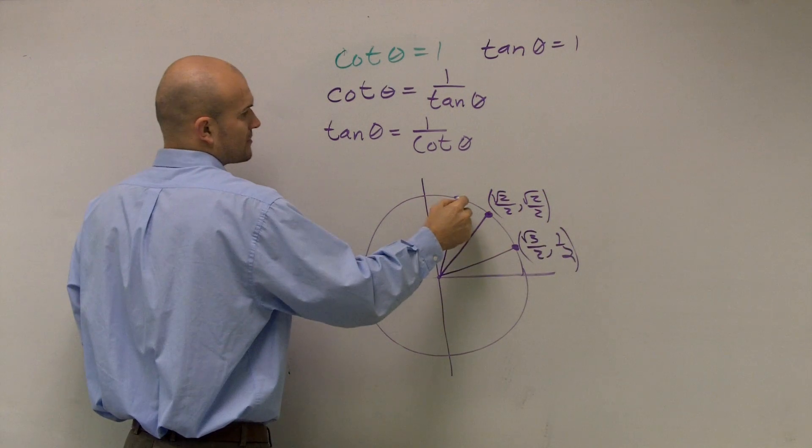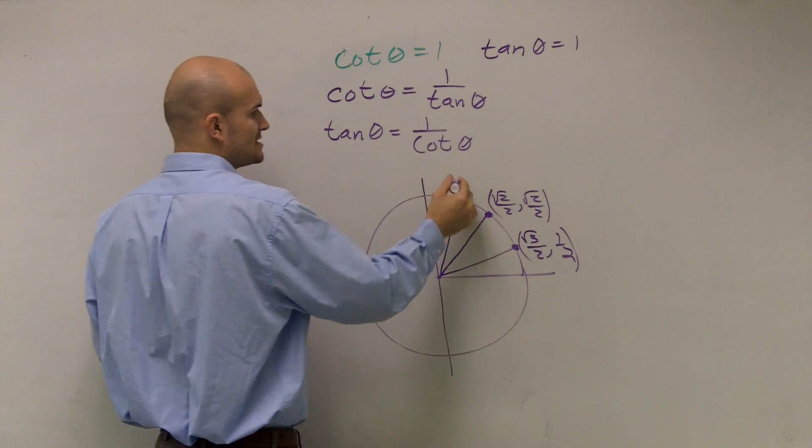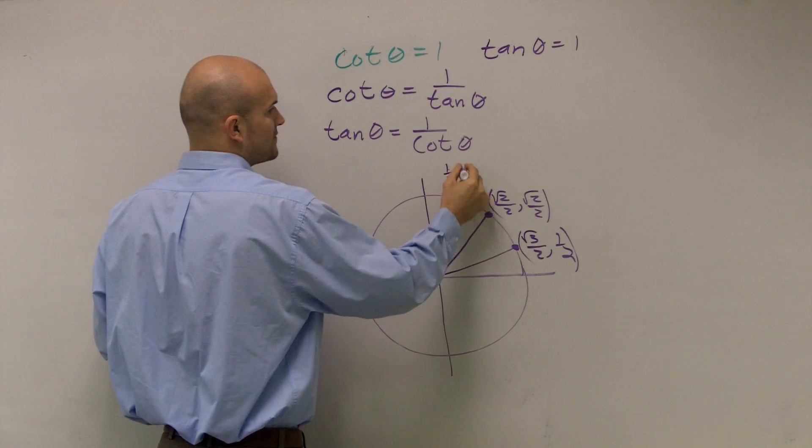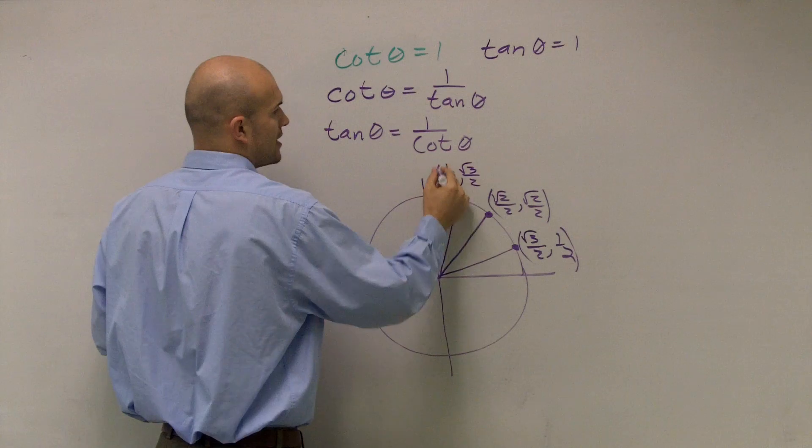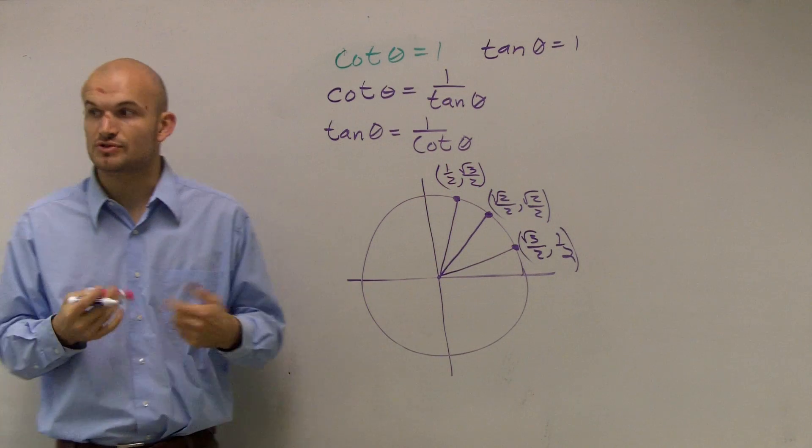And then I have my last point which is pi over 3 at 60 degrees, which is 1 half, square root of 3 over 2. And remember these are your x and y coordinates for each of these points which we label t.